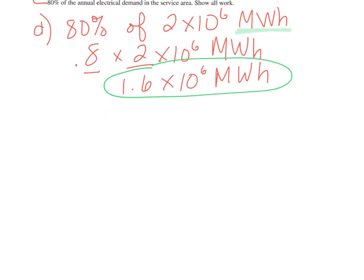The next one is E. Customers in the service area pay 20 cents per kilowatt hour for electricity. Calculate the amount of revenue that will be produced if the wind turbines provide 80% of the electrical demand in the service area. For E, you need the answer from above.